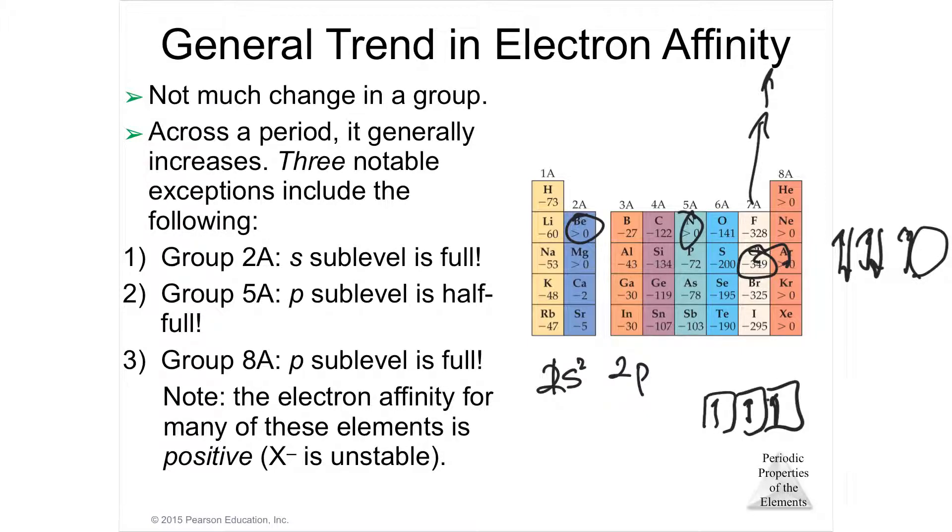So it's going to be very likely to steal. That means that things on the right side of the periodic table are going to be very likely to steal. Things on the left side are more likely to be stolen from. They would rather become cations and be more stable that way rather than have to steal to be stable.